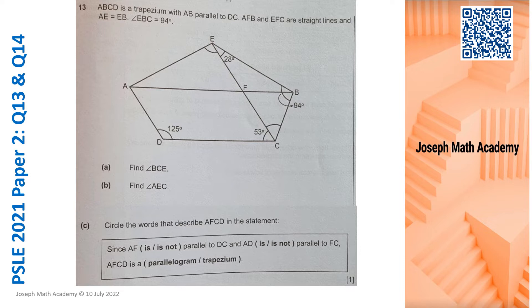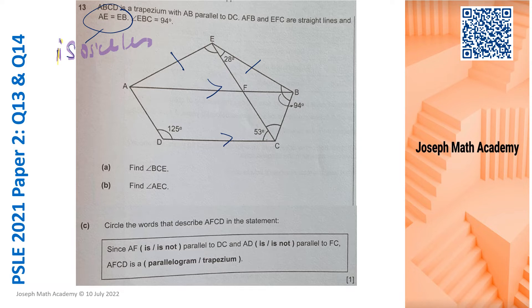ABCD is a trapezium and we are given that there are two parallel lines. AB is parallel to DC, so I'm going to indicate the parallel lines with an arrow. We also know that AE is equal to EB, so equal means we use marking. From here we can conclude that this equality means isosceles, so we have to adopt the isosceles triangle property. I'm going to do the question now and I'm going to use the diagram throughout the entire question.